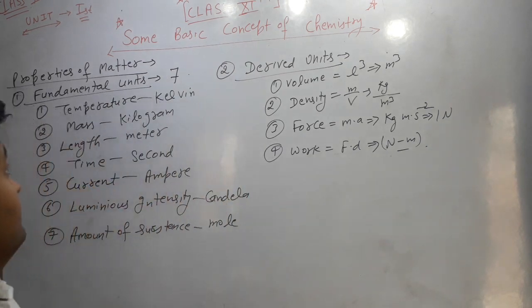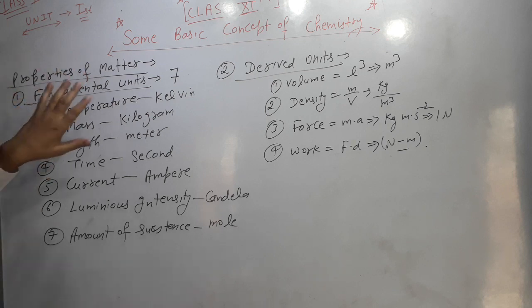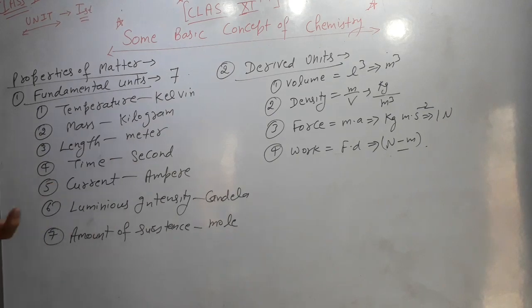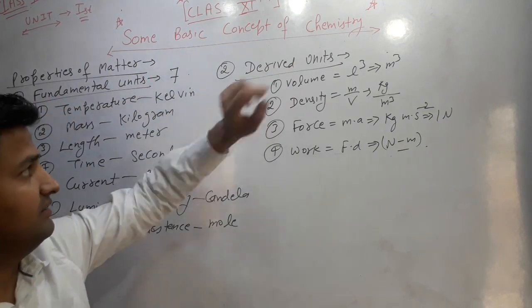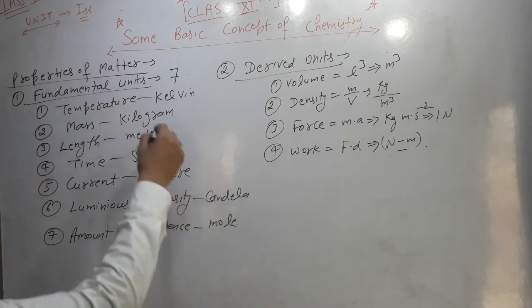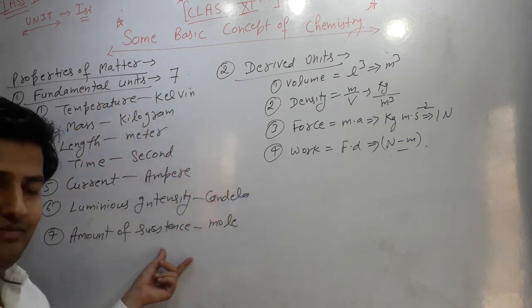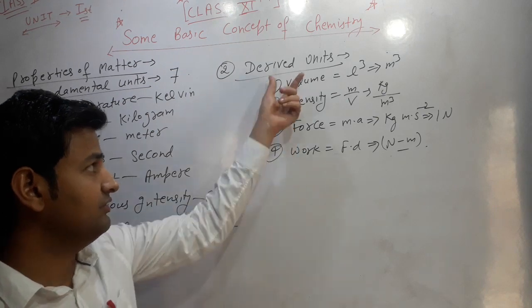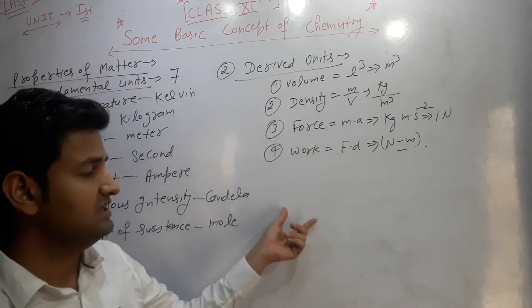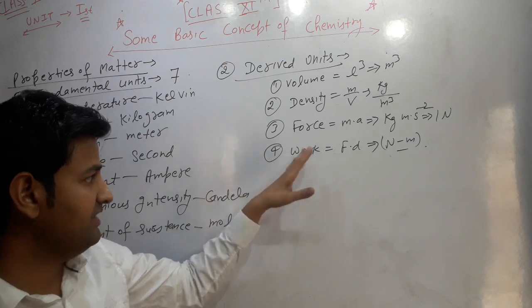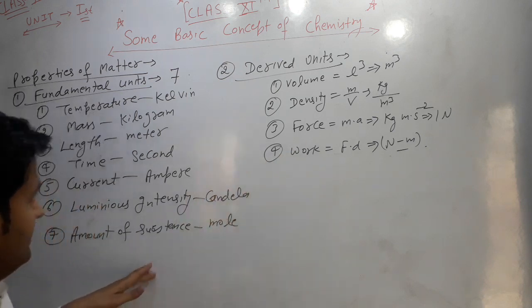Our next topic in this unit is properties of matter and units. There are mainly two types of units: fundamental units and derived units. Fundamental units are the basic units. By using these fundamental units we derive the units of some other quantities, which are called derived units.